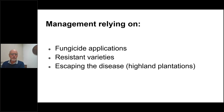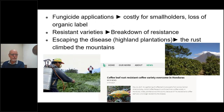Particularly in North and South America, one strategy was escaping the disease by planting in highlands — if you plant above 1,500–1,700 metres the rust doesn't do damage. But each of these strategies has faced major challenges. Fungicide applications are costly for smallholders and you lose your organic label. Resistant varieties have been facing breakdown of resistance — in 2017, the major variety grown in Honduras, Lempira, had its resistance overcome by the rust, and every time this happens it's a disaster.